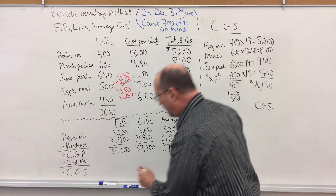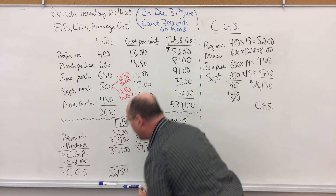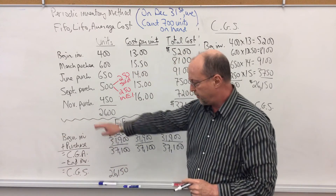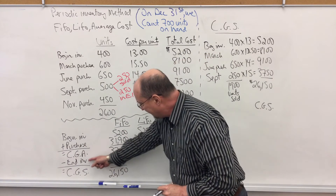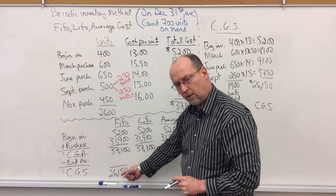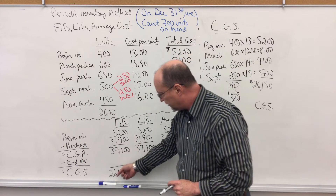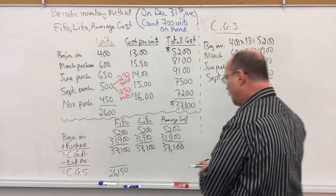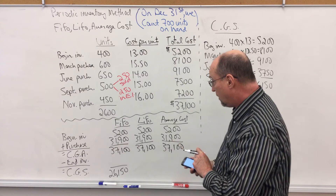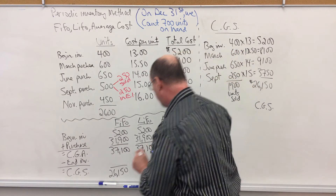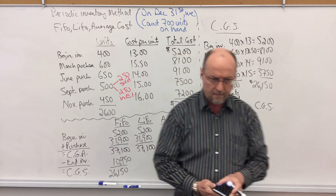That is my cost of goods sold, so I'm going to put that down here: $26,150. Now, this is the cost of goods sold equation: beginning inventory plus purchases equals cost of goods available, minus ending inventory equals cost of goods sold. So we can calculate ending inventory by simply subtracting cost of goods available minus cost of goods sold: $37,100 minus $26,150 equals $10,950. That's the value of my ending inventory.